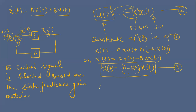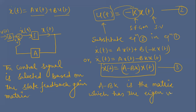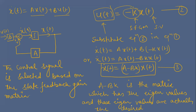In equation three, (A - BK) is the matrix whose eigenvalues are actually the desired closed loop poles.